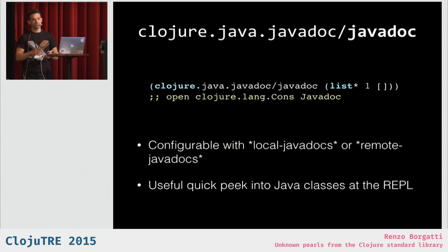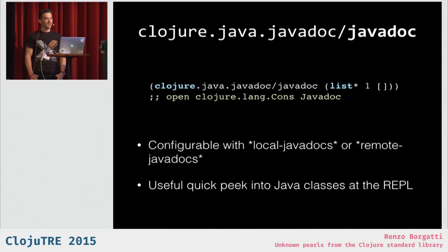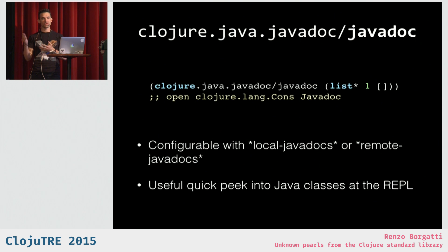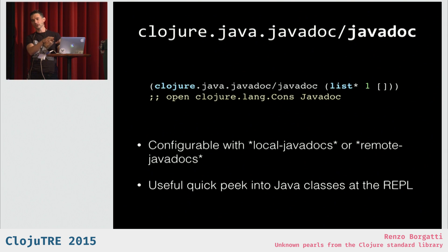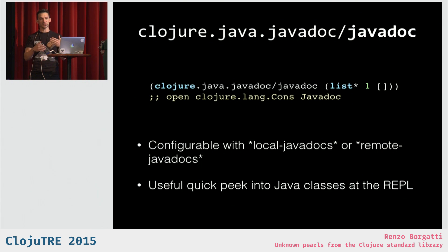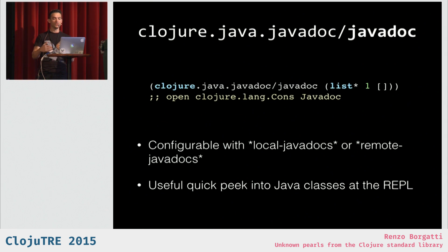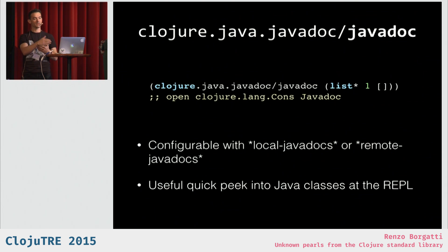Similar to this, there's `javadoc`. If you're doing a lot of Java interoperation in Clojure, you might be jumping in and out of Java docs. This is a handy REPL tool that opens Java documentation pointing at the class or type you pass to the function. For example, `javadoc list` — since `list*` returns a cons, this opens the Clojure `cons` documentation. It has a list of default locations to look for Java docs, even locally if you have them installed, and you can override that list with dynamic vars.